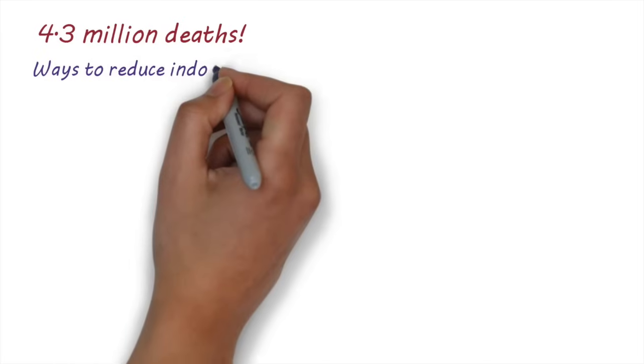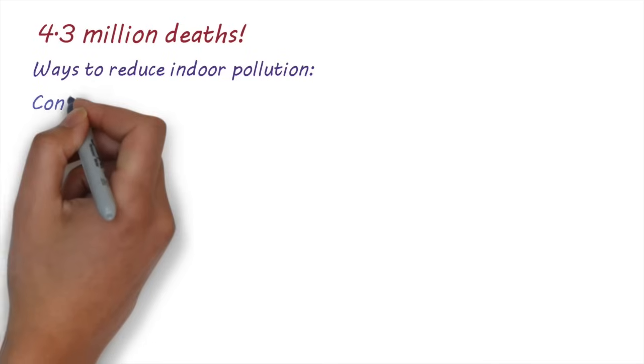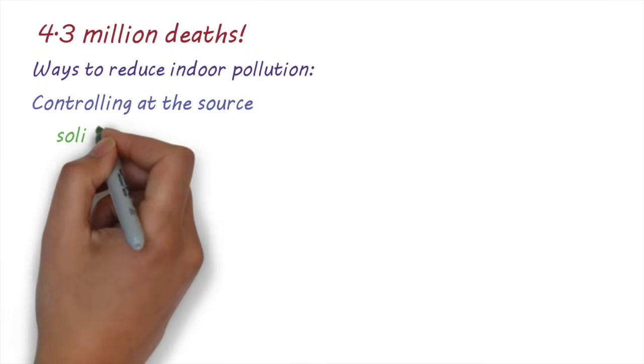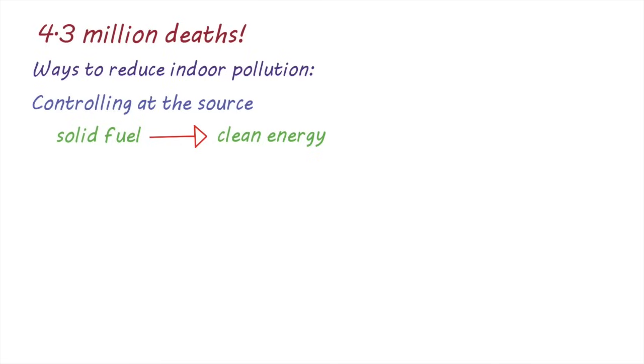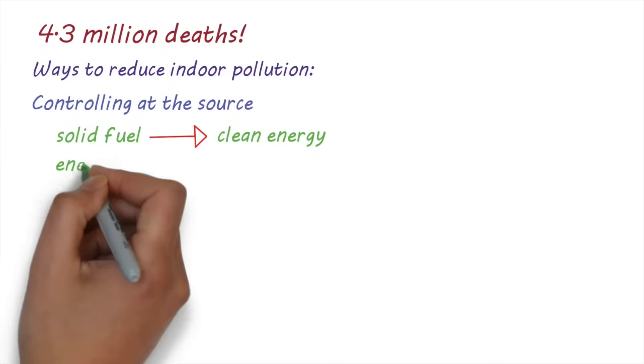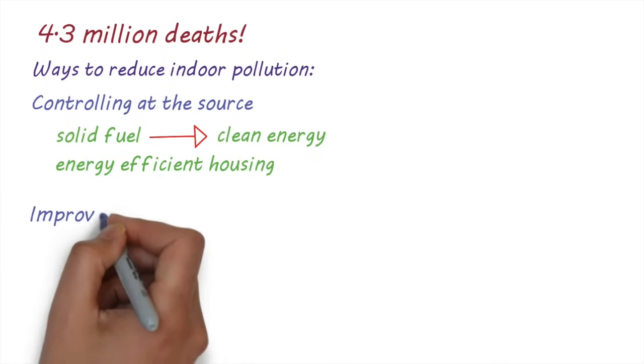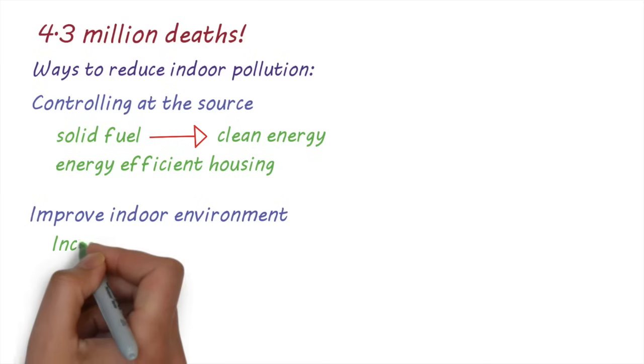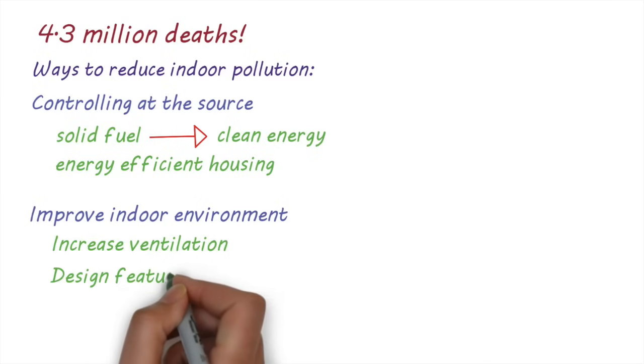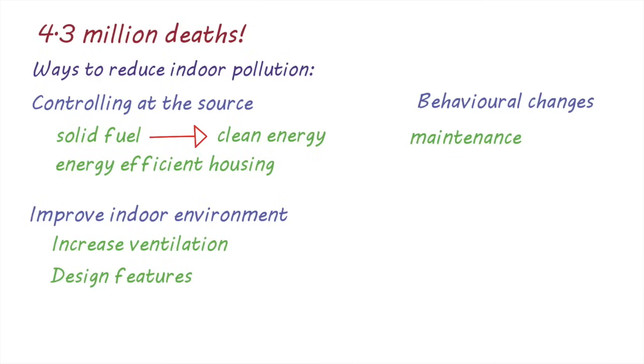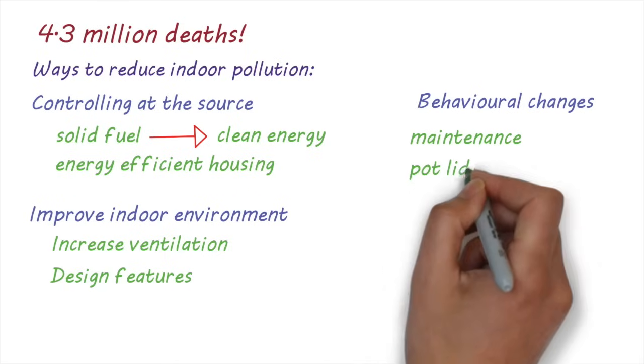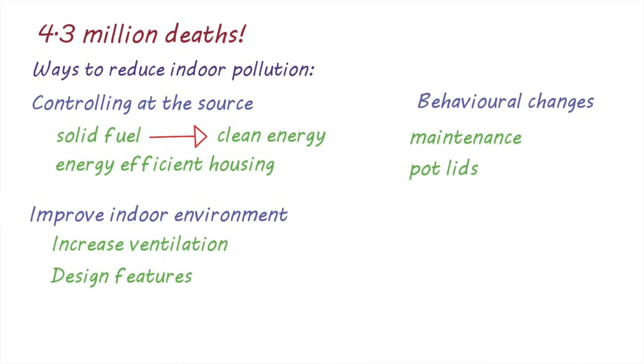There are several ways to reduce indoor air pollution, including controlling it at the source. This includes actions like changing from solid fuels to cleaner and more energy-efficient solutions like biogas, electricity, or solar power, improving cooking devices, and reducing the need for open fire heating by constructing energy-efficient housing. Making improvements to the indoor environment. This may include increasing ventilation through windows or chimneys or other design features like having the kitchen separate from the house. Behavioral changes like properly maintaining stoves and chimneys can reduce the accumulation of pollutants. Exposure to indoor pollution can also be reduced with actions such as using pot lids to conserve heat and minimize cooking time.